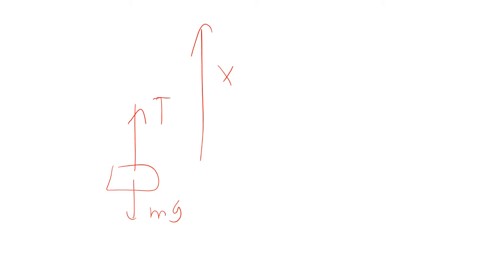Now, if we're going at constant speed, tension equals mg. And so, that means that the work done is going to be mgx.